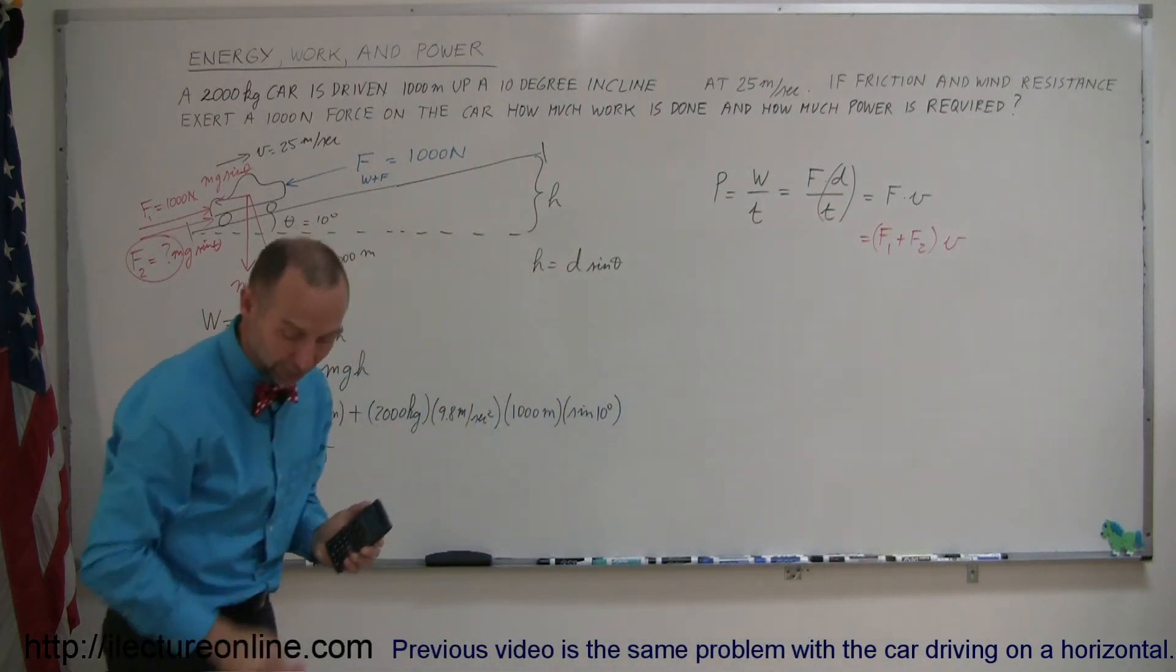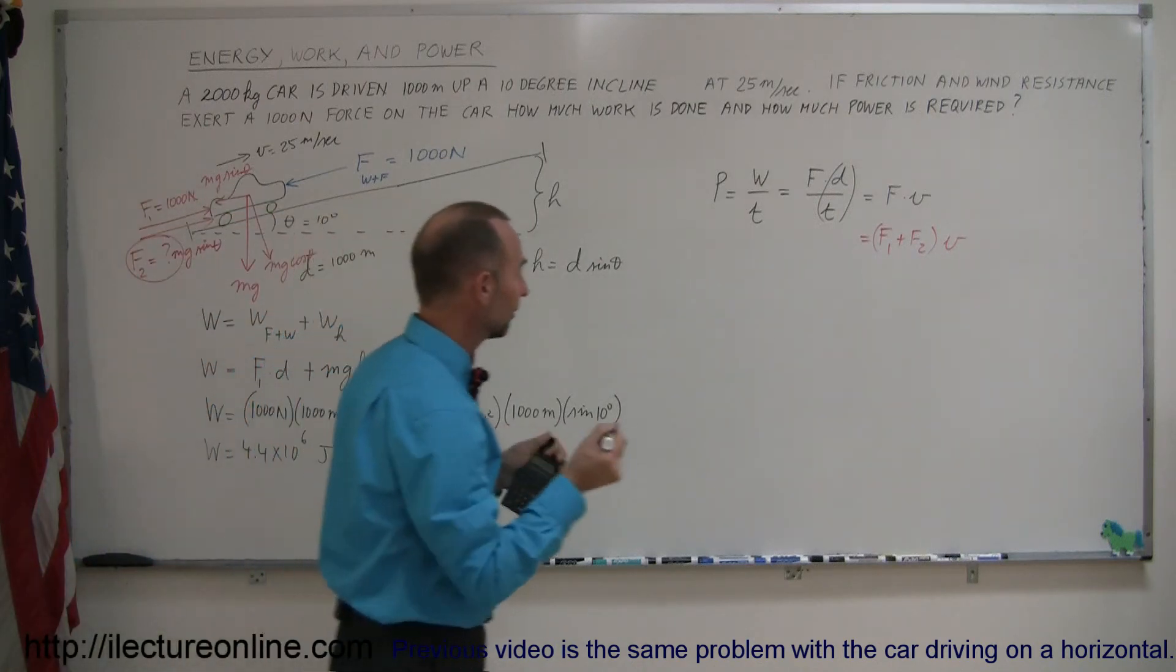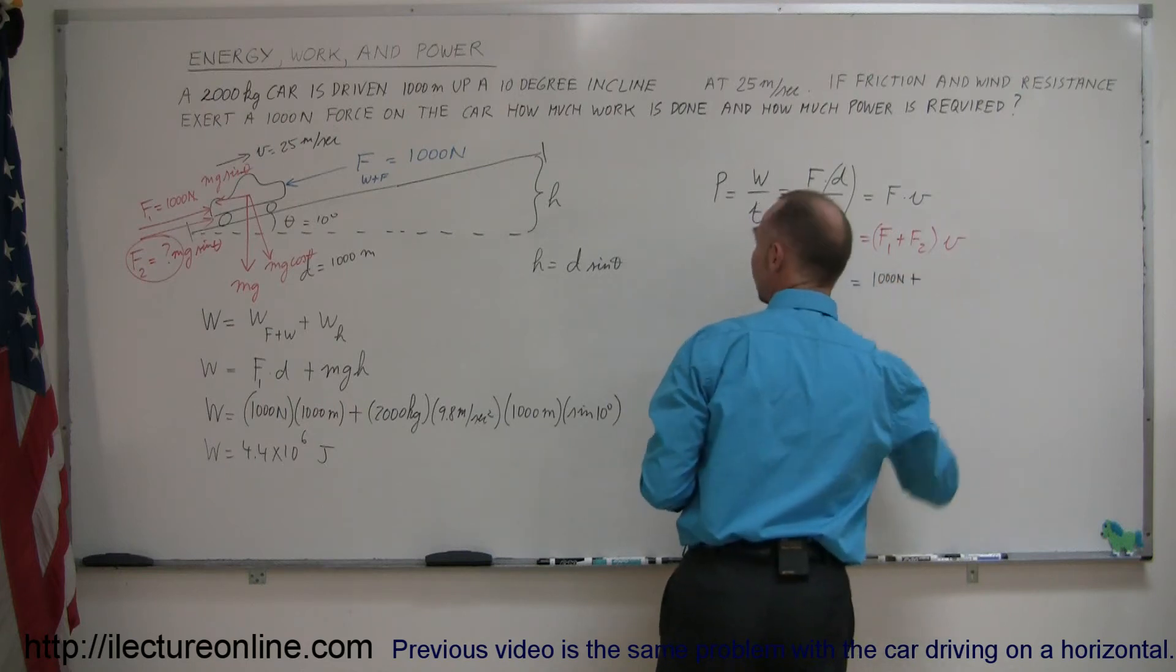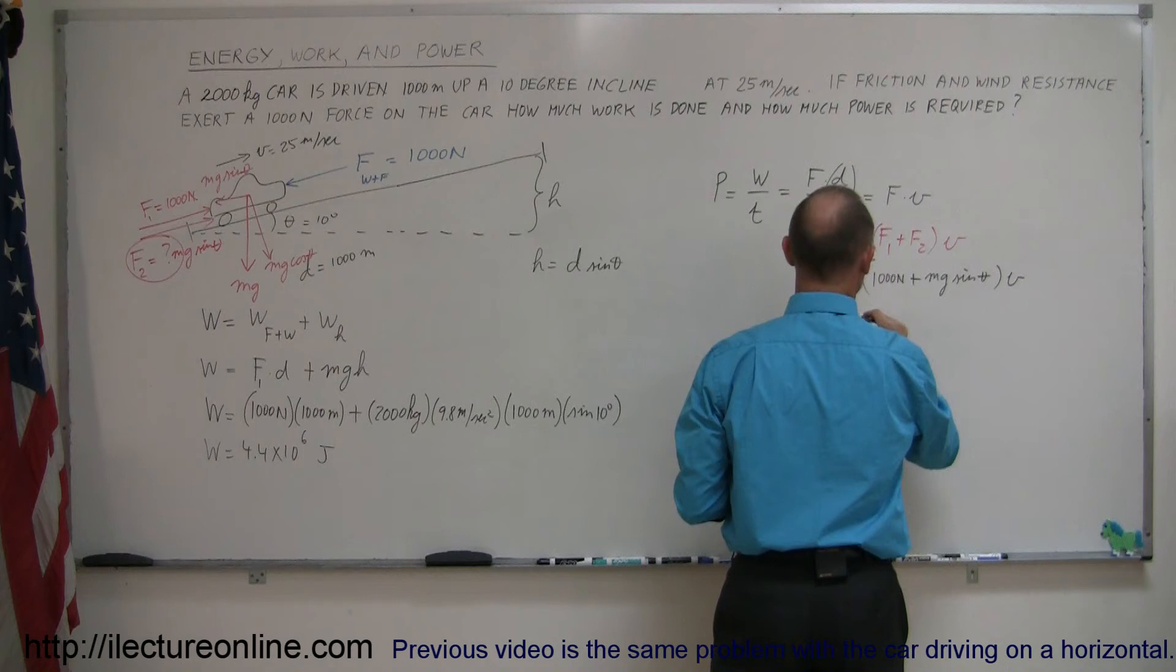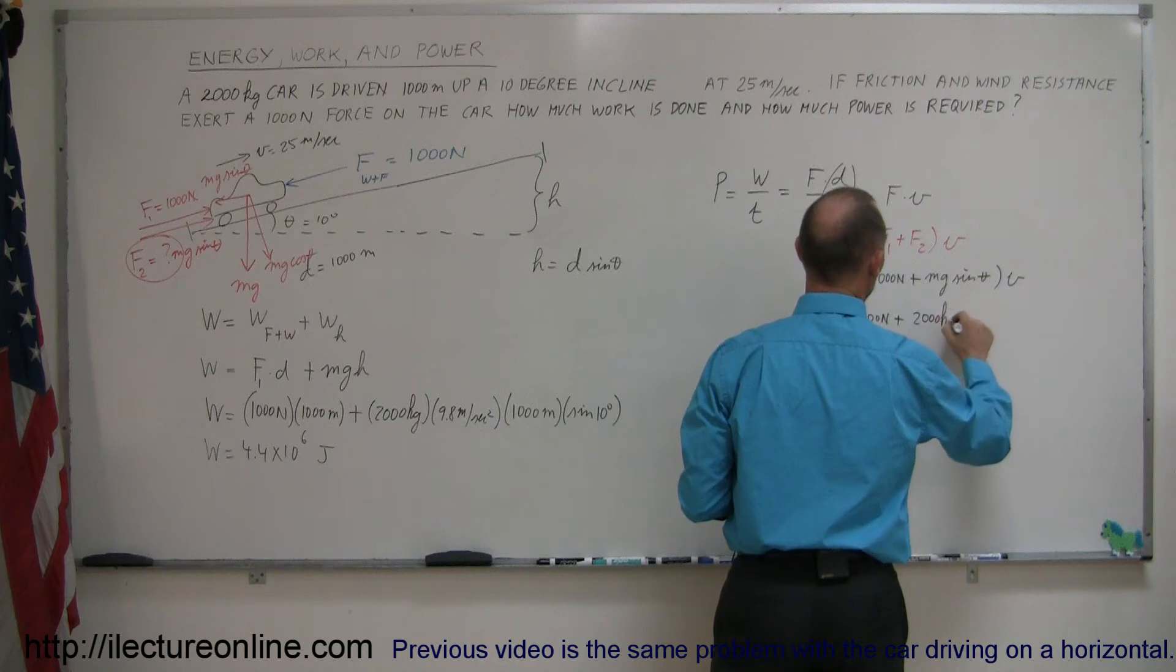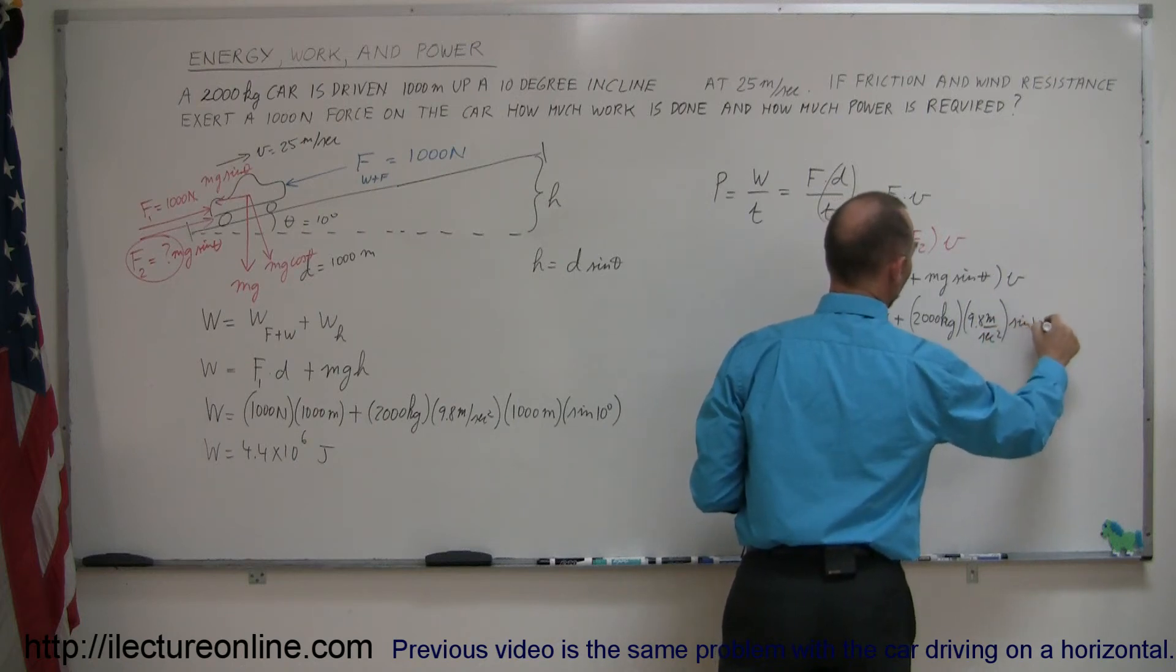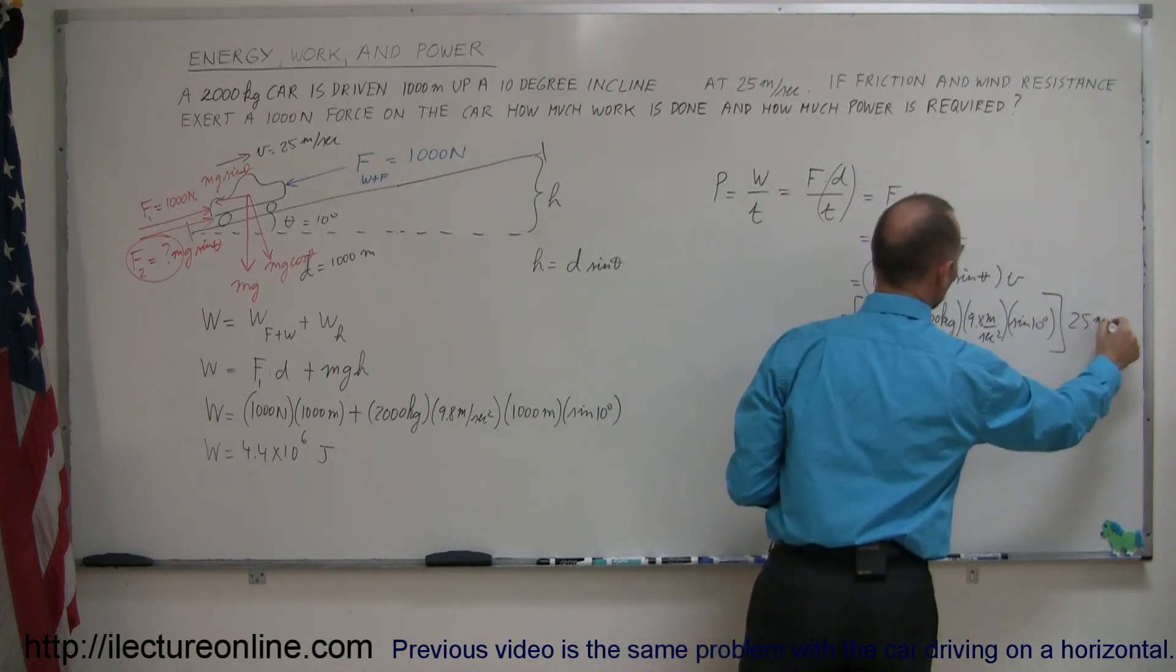And so, now we can go ahead and plug in what those are. Force 1 is still the 1,000 newtons to overcome friction. That's 1,000 newtons plus F2, which is mg sine theta, times the velocity. 1,000 newtons plus mass is 2,000 kilograms. G is 9.8 meters per second squared. Sine of 10 degrees. And take the whole thing and multiply times the velocity, which is 25 meters per second.